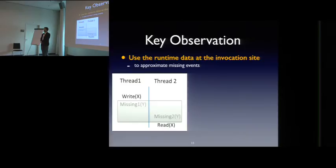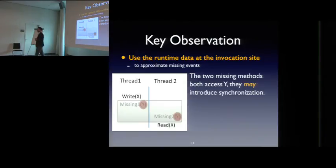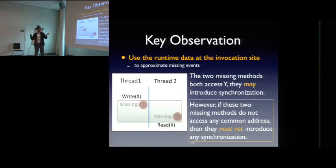So the key observation of this work is let's use the runtime data at the invocation sites to approximate missing events. Although we don't know what's happened inside missing events, we know when we call this missing method what we have at runtime. In this case, we know both of these two methods reference y here. So these two missing methods may use y to do synchronization. However, if these two missing methods do not access any common address, suppose this missing method access x and this missing method access z, they won't introduce any synchronization. So that's the key insight of this work. They must not introduce any synchronization if these two missing methods do not access any common address.